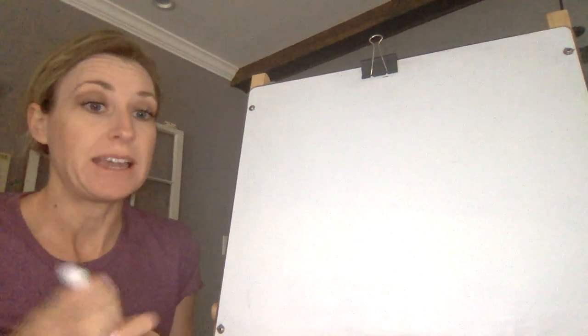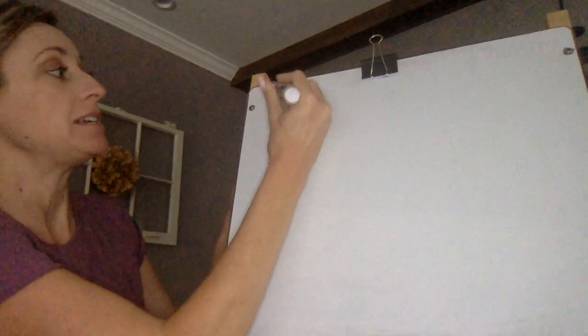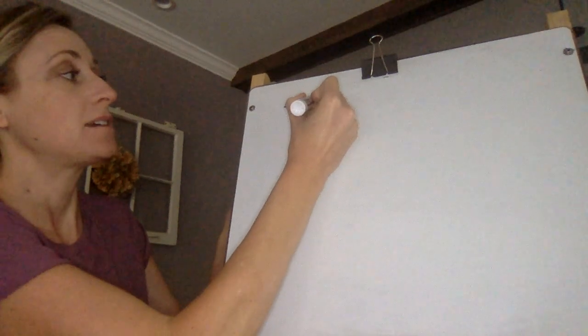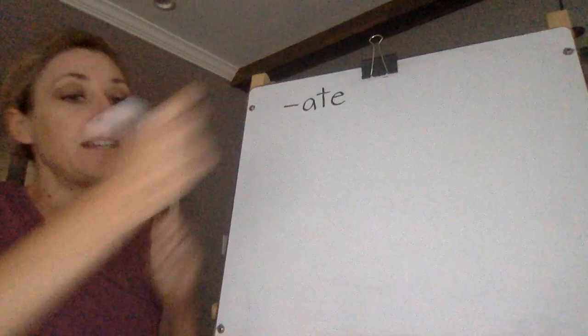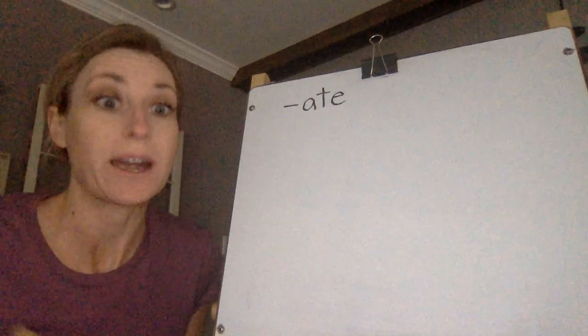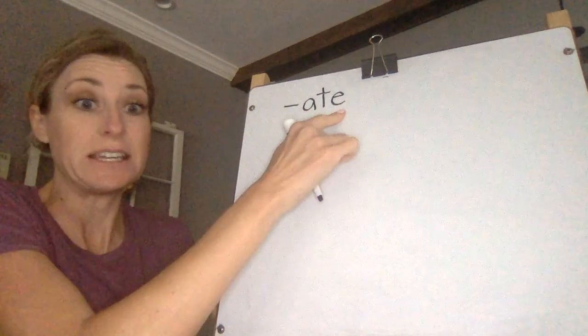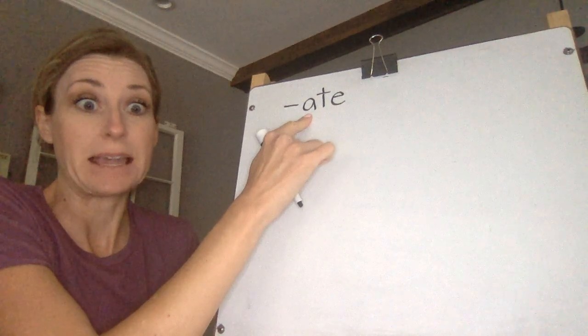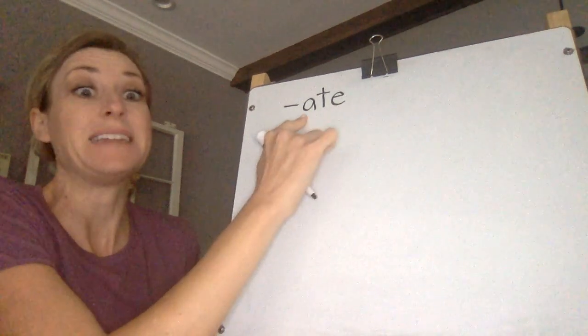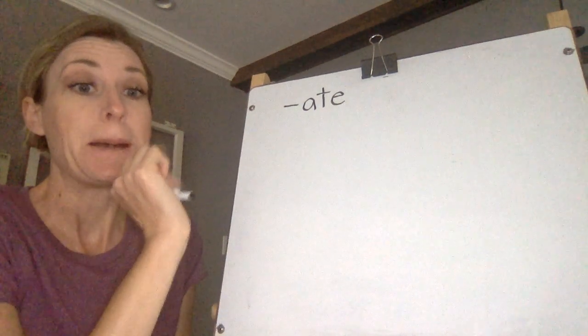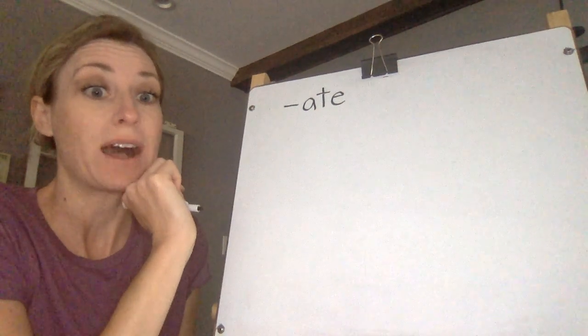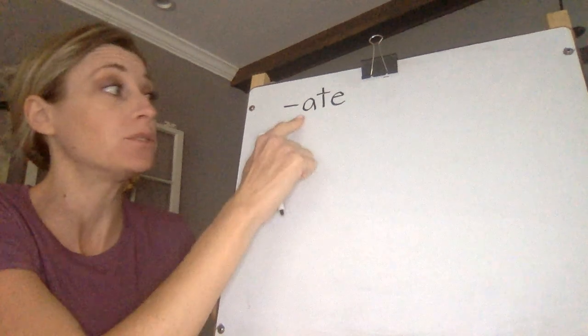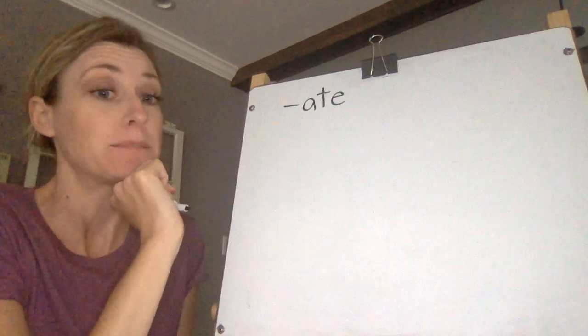Today we are going to be looking at the A-T-E ending. In some of these words, the A-T-E ending is making the correct sound. The E is making the long A say its name, so at the end it's making the eight sound. But some of the words are being lazy and they're making the schwa sound, but they're still spelled with the A-T-E spelling.